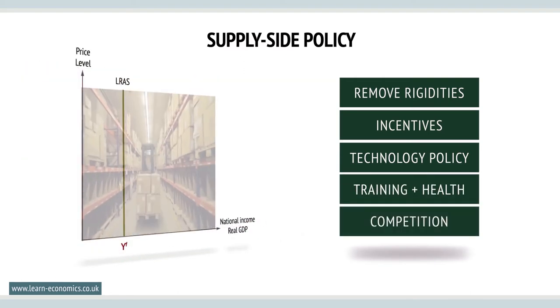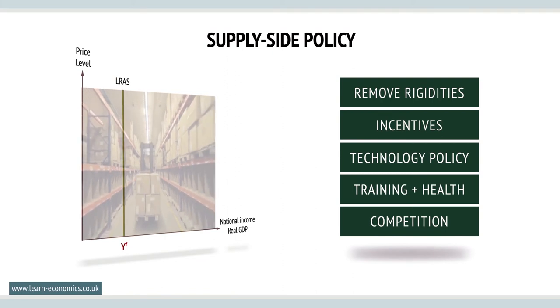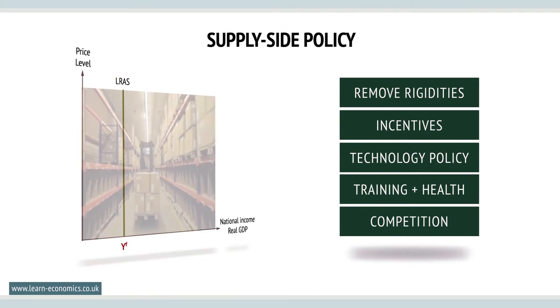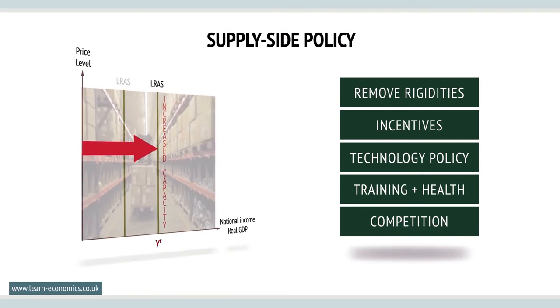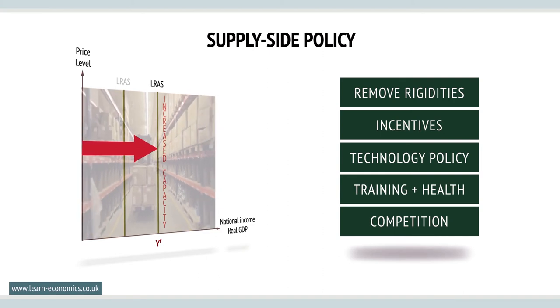The long-run aggregate supply curve is influenced by supply-side policy. Although vertical, it can shift if productive potential increases.